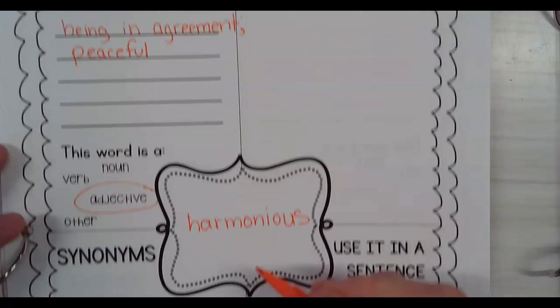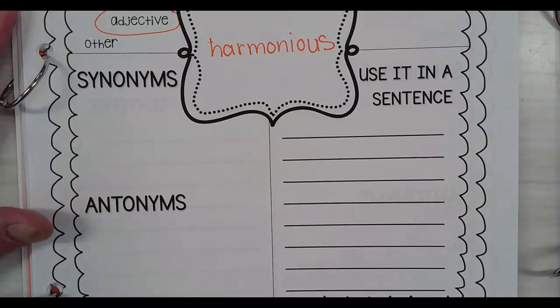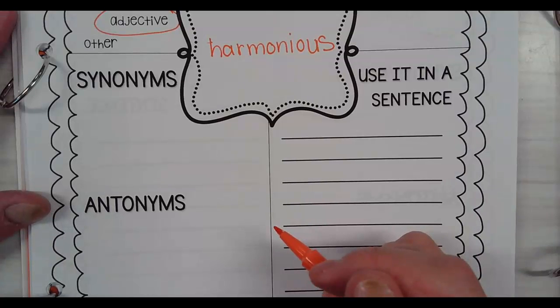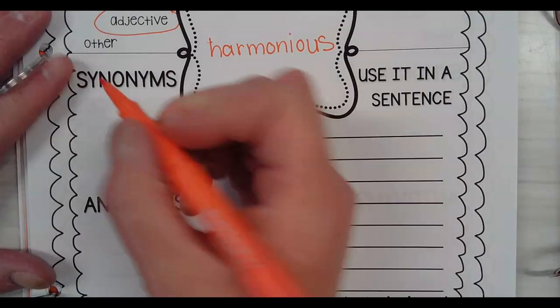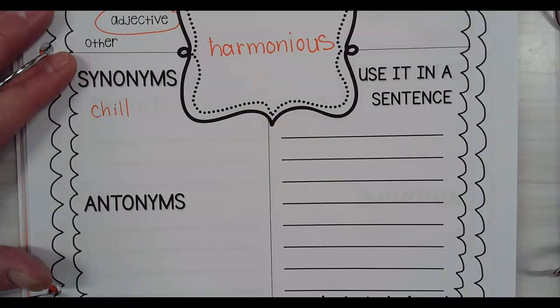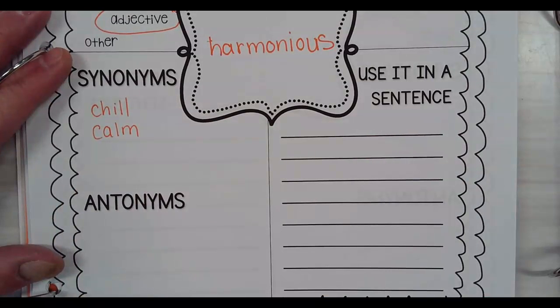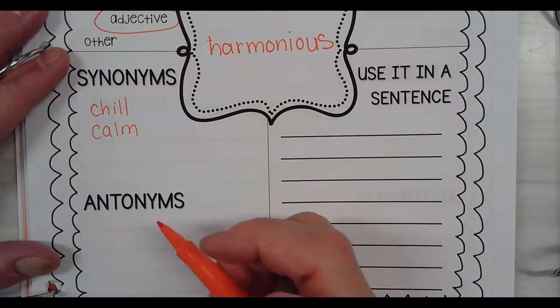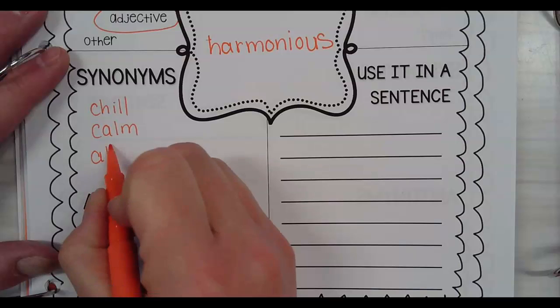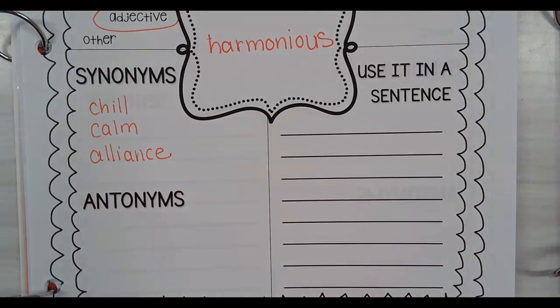Synonym. What's another word that means harmonious? Chill? Yeah, alliance is a good one. Like in Survivor they get into an alliance, right? I'm working on your team, kind of thing.